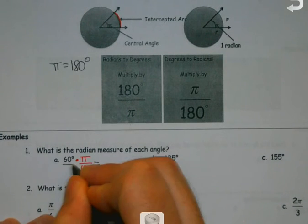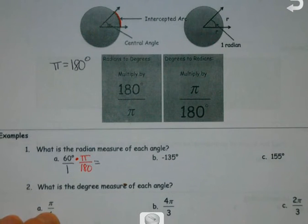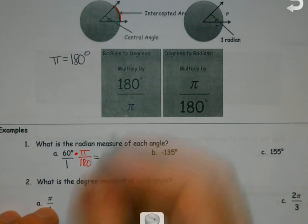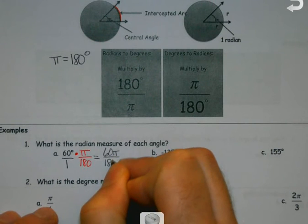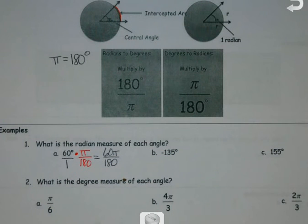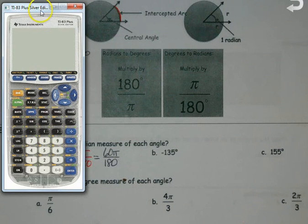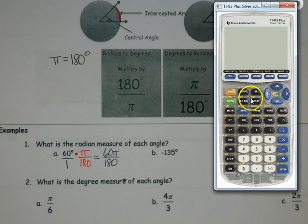So I multiply straight across. If I want to put the 60 over 1, I can, if that makes a little more sense to me. And I have this 60π over 180. But I always want to reduce things like this. So here's how I'm going to do that. I do not want to use the π in my reducing.